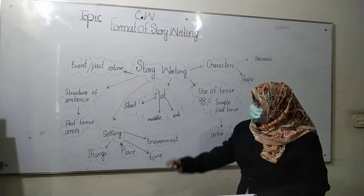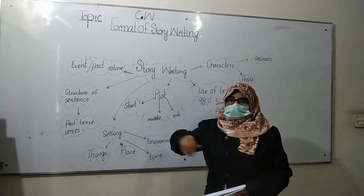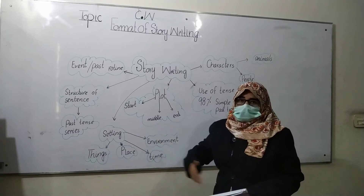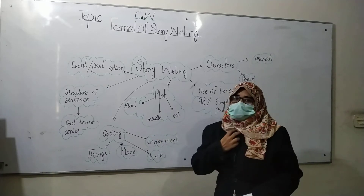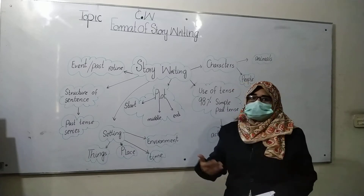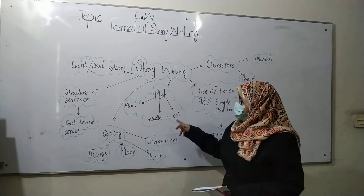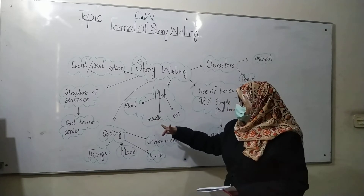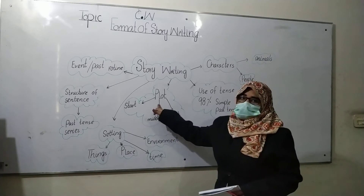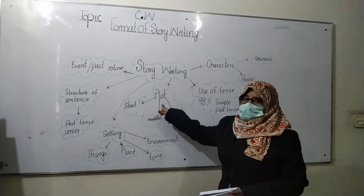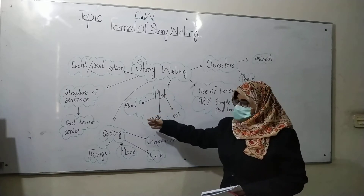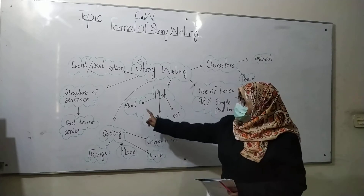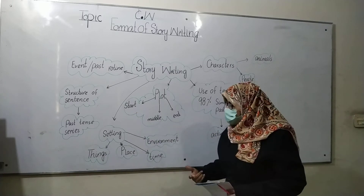The first element is the plot. What is the plot? Plot means how to start a story, what happens in the middle, and where you are concluding your story. One plot of the story has three further elements. These three elements are contained within one plot.